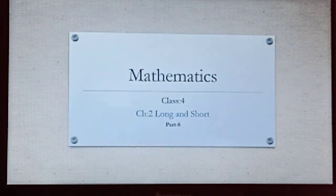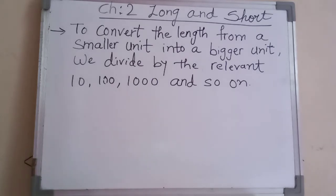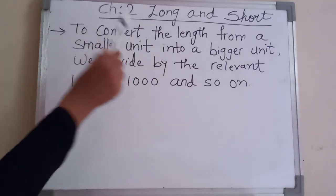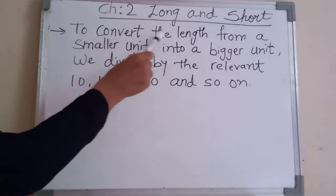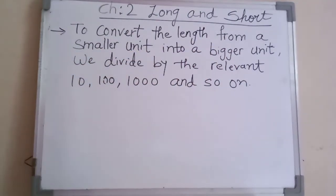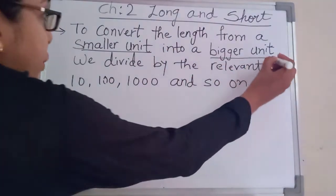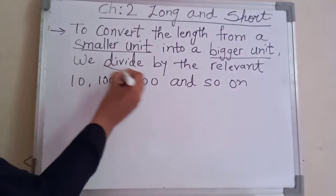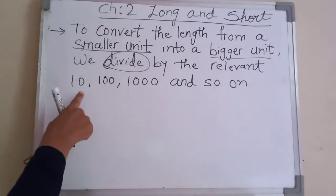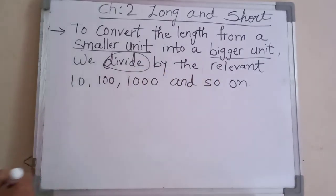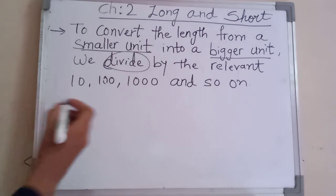Now I am going to teach you a new exercise. Before starting, we will see the basic rule: to convert a length from a smaller unit into a bigger unit, we divide by the relevant ten, hundred, thousand, and so on. That means when we go from smaller unit to bigger unit, we divide.